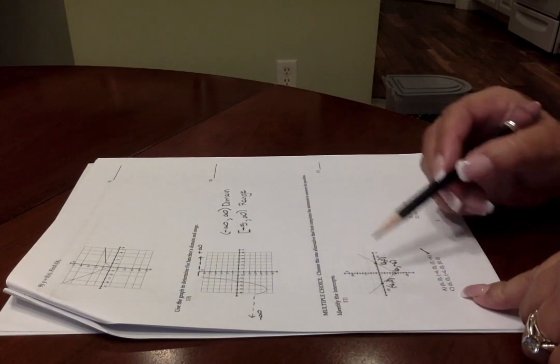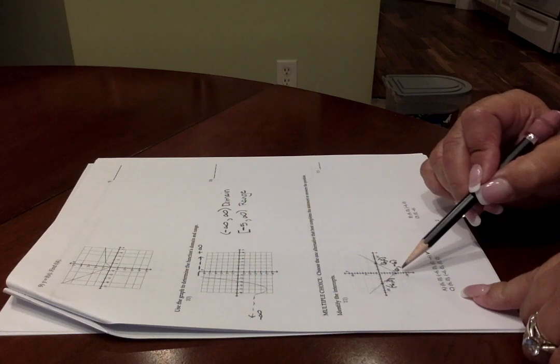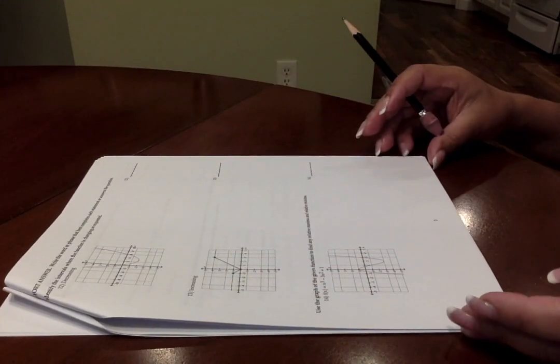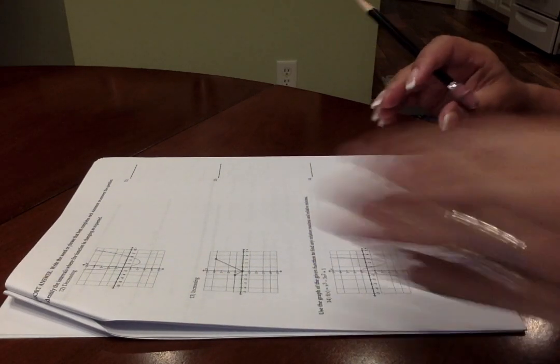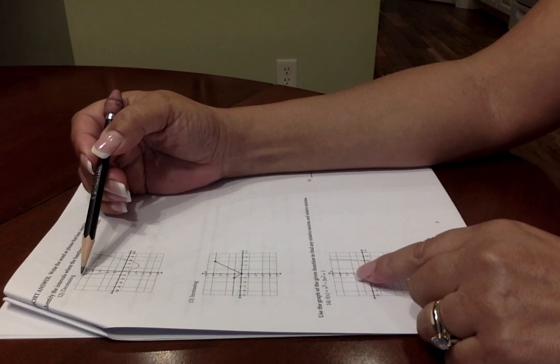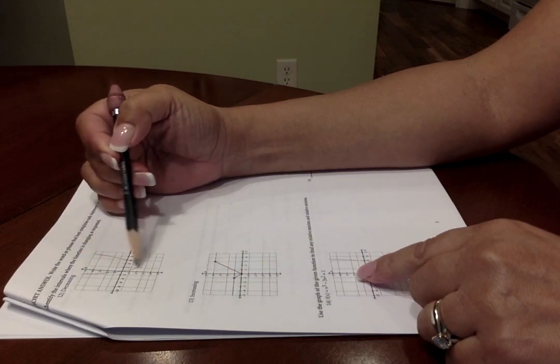Don't forget, there's three intercepts showing there, two on the X axis, one on the Y axis. Moving on to number 12, when you're answering whether it is increasing or decreasing, you're going to scan the graph from left to right, following along the curve, observing whether you are falling or rising.